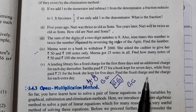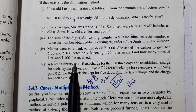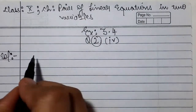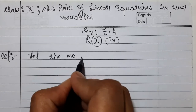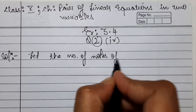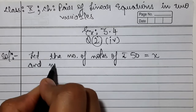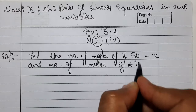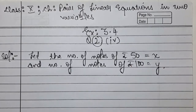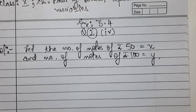Let's start with the solution. Let the number of notes of Rs. 50 be variable x, and the number of notes of Rs. 100 be variable y. We have two conditions given: the total amount is Rs. 2000, and the total number of notes is 25.